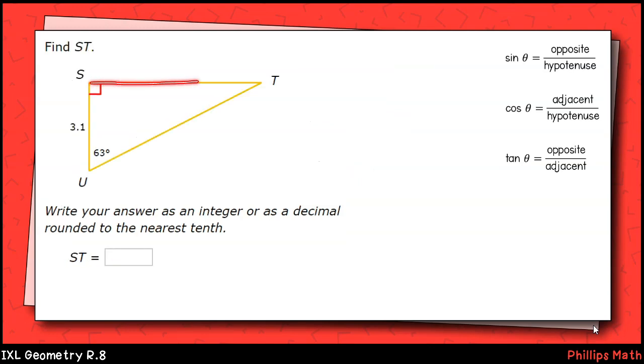Next, we're asked to find the leg opposite the 63 degree acute angle. We are given the leg adjacent to that angle. From our list, it makes sense to choose the tangent function, which relates the legs opposite and adjacent to that angle. We'll set this up as tangent 63 equals the missing leg, we'll call it x divided by 3.1.